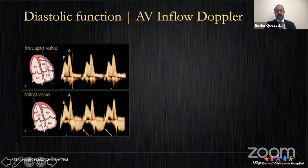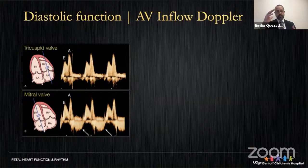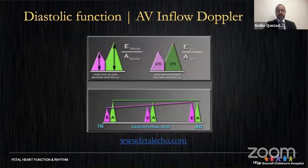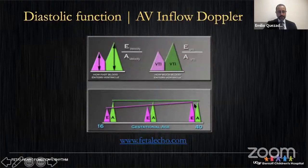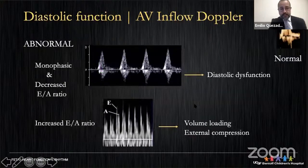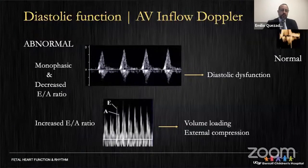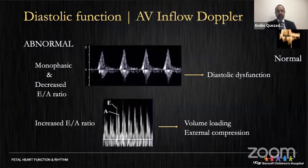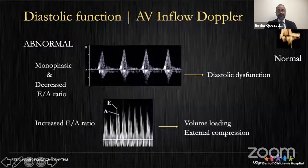Given the lower ventricular compliance in the fetal heart, the A-wave normally exceeds the E-wave, and at 16 weeks the E/A ratio is typically greater than one. With advancing gestational age the E-wave increases. Abnormal patterns include a monophasic pattern — fusion of the E and A waves — indicating diastolic dysfunction, or inversion of the E/A ratio due to preload impairment, which reflects volume loading without diastolic dysfunction.